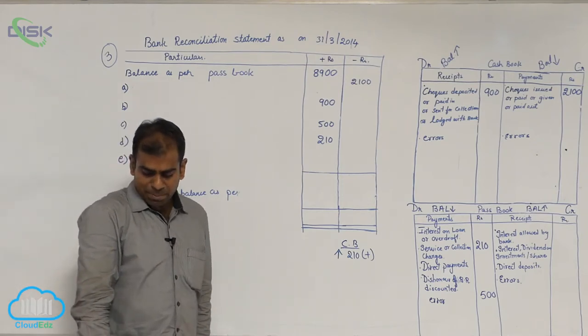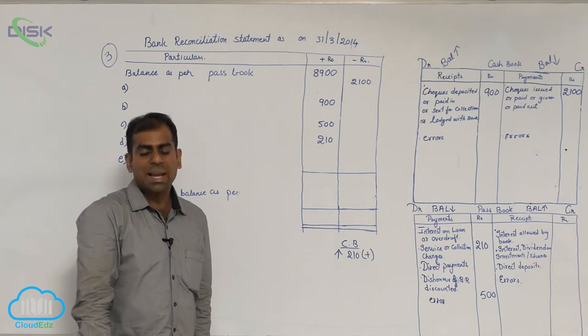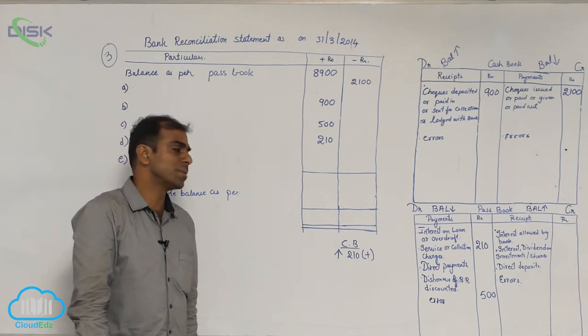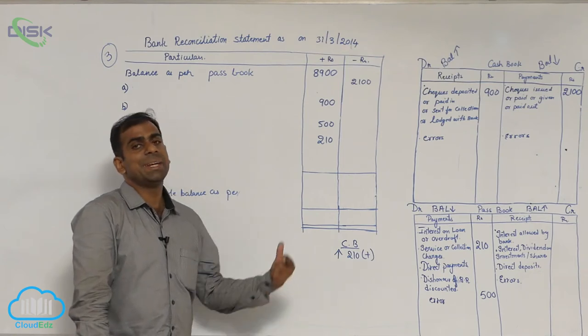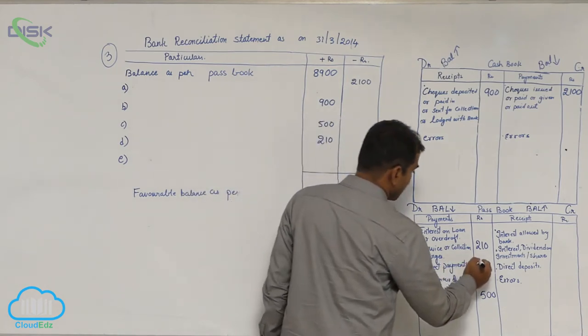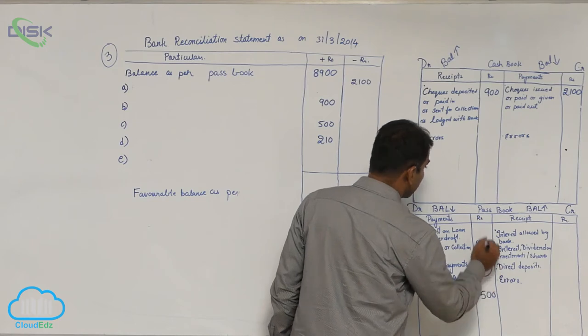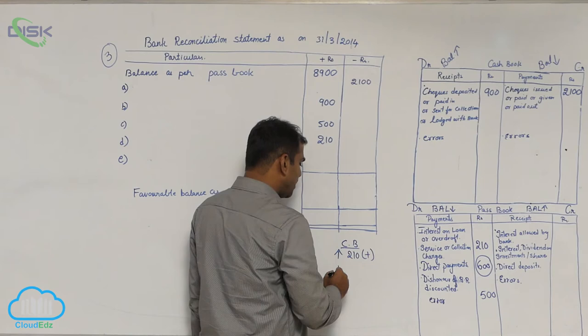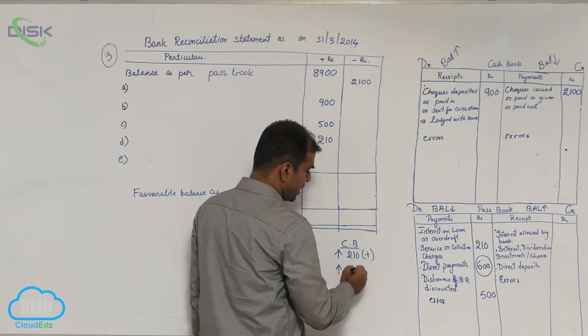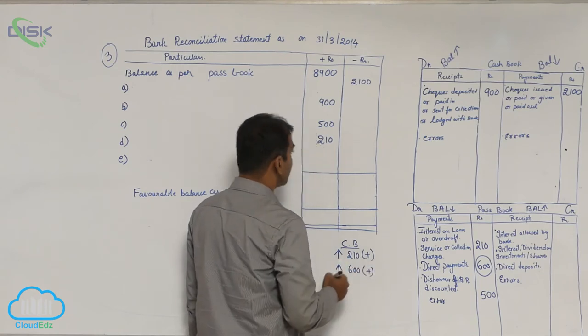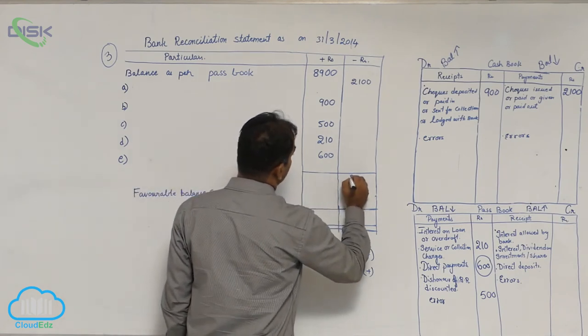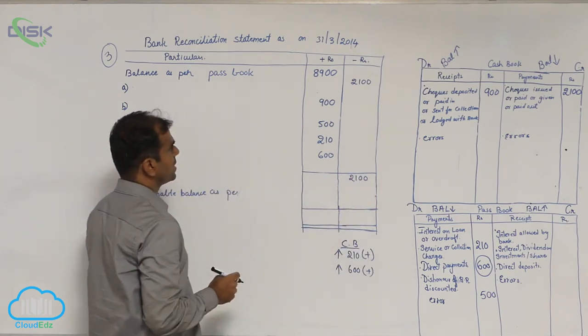Next, direct payment of insurance premium as per standing instructions, Rs. 600. Usually direct payments are made by whom? By the bank. So when bank is making the payment, it will be entered in passbook. Which side? Direct payment is on the debit side. So how much? 600. So 600. Now again as a result of this 600, passbook balance will come down now. But we are finding out cashbook balance, opposite treatment. So it will go up. So it will go up. So 600. And so you will say direct payments made by bank and not recorded in cashbook or whatever it is.